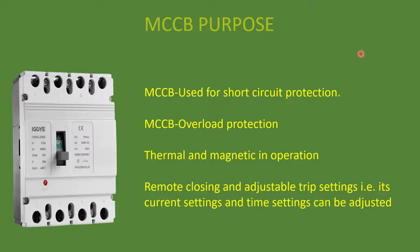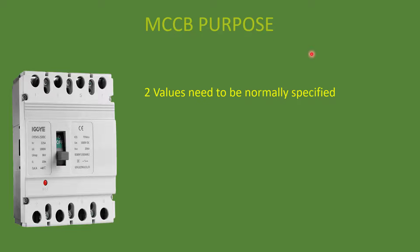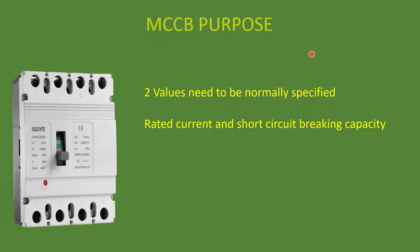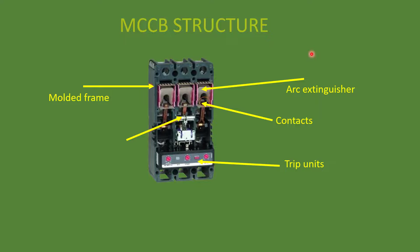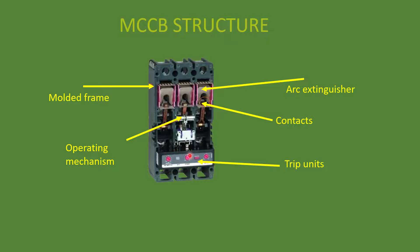It is used in sub-main or main distribution boards. When buying an MCCB you must specify two values: the rated current, which is the maximum allowable current, and the short circuit breaking capacity — the maximum short circuit current it can withstand. The parts of MCCB are almost the same as MCB: arc extinguisher, fixed and movable contacts, trip units, molded frame, and operating mechanisms. The key difference is that MCCB has remote closing and adjustable trip settings — the operating current range and tripping time can be adjusted and it can be operated remotely. The operation is also the same as MCB, with a magnetic coil and piston for short circuit protection and a bimetallic strip for overload protection.